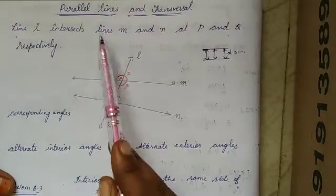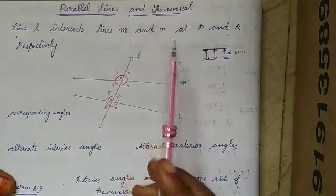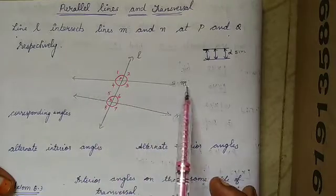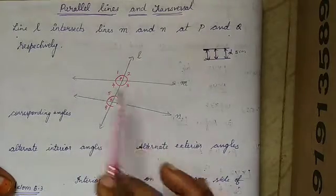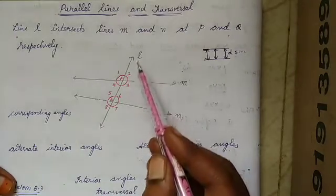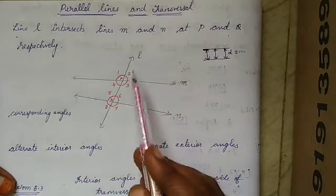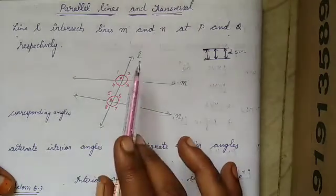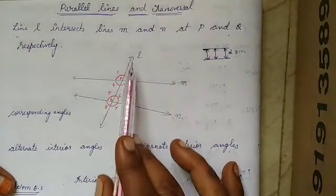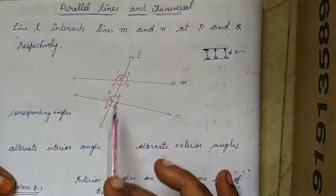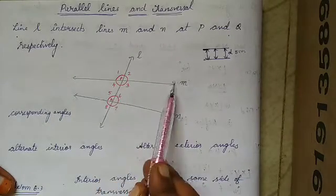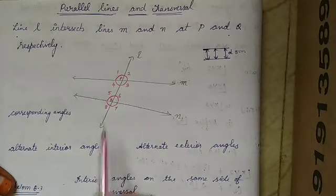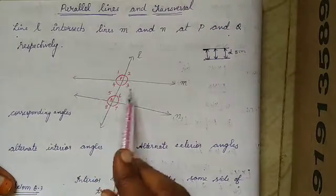Line L intersects lines M and N. I have taken two lines here — line M and line N. One more line passes through them; let us take this as line L. This transversal line passes through these two lines and intersects line M at point P and line N at point Q.